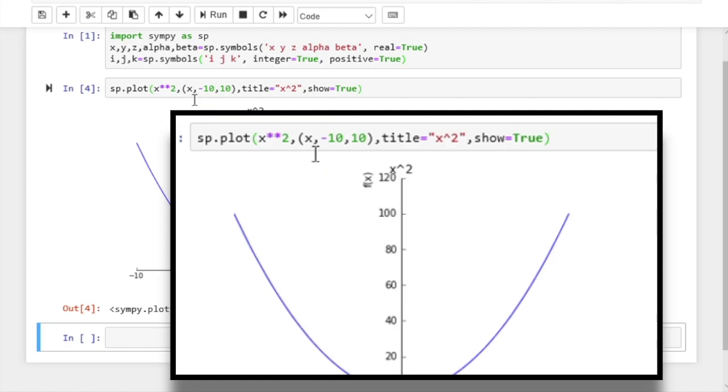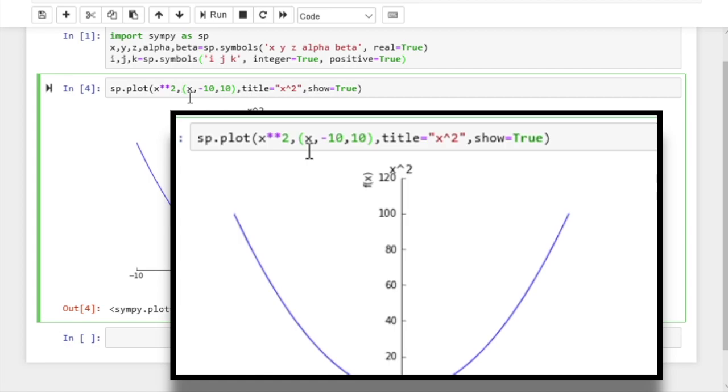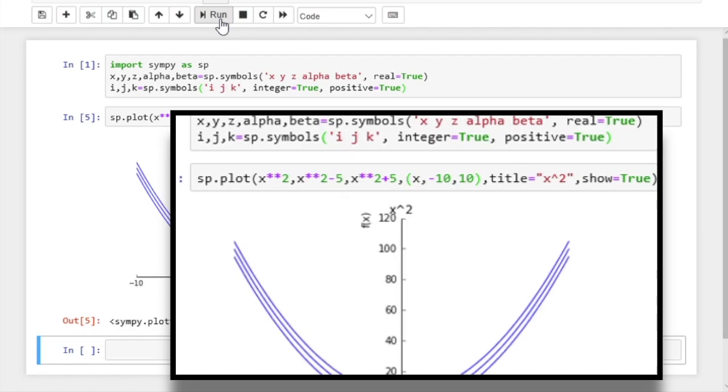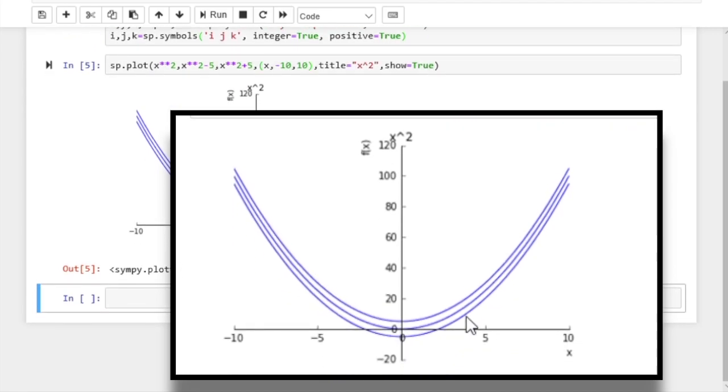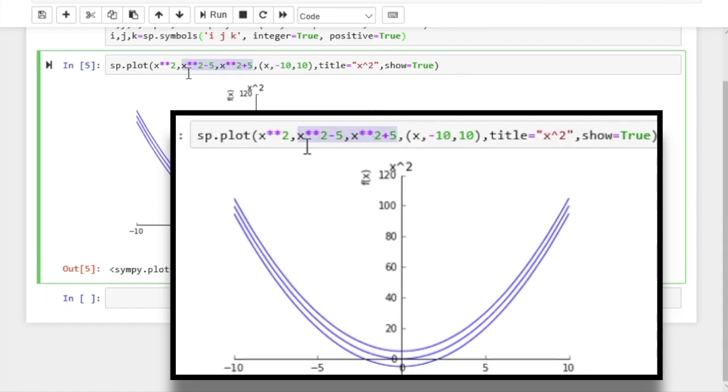Now there are other options one can use to make the graph prettier and more descriptive, but for now let's add two more lines to the chart. So let's try x squared minus 5, and x squared plus 5. So these will vertically shift the graph. And if we run, we have the three lines, but they have the same color. So we can't tell one from the other. So we need a bit more control. So let's remove the lines for now. And let's run so that we refresh things.